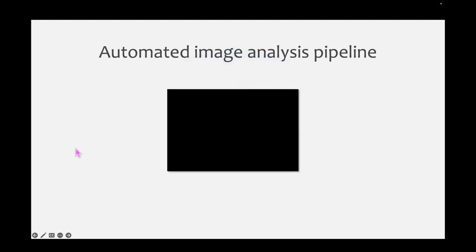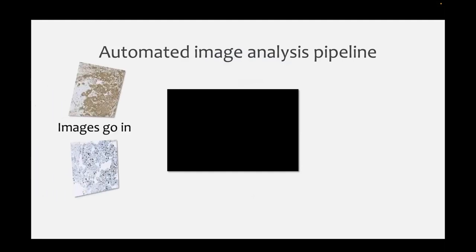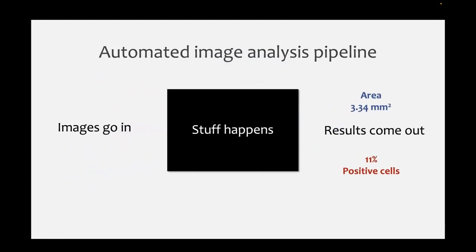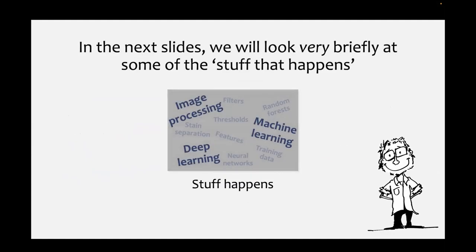It would be good to give a general overview of some terms that we will use in this talk, but also have been used elsewhere. Here's a simple illustration of an image analysis pipeline where you have images go in, and you can treat it as a black box where some kind of stuff happens and then results come out at the other end. What I'd like to do in the next couple of slides is to explain some of the stuff that happens.